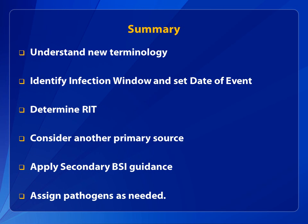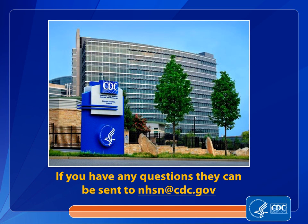In conclusion, familiarize yourself with the new terminology and definitions before applying protocols. Identify your infection window and set your date of event to determine your RIT. If another primary infection source is considered for a BSI, then the site-specific definition must be met and secondary BSI guidance must be applied before calling a BSI secondary to another primary source. Apply the pathogen assignment guidance as needed. This concludes the NHSN Hot Topic Update focusing on reporting changes for BSI protocol. Additional resources can be found on the NHSN website. For other questions, please contact NHSN User Support at nhsn@cdc.gov.